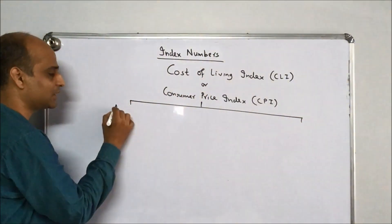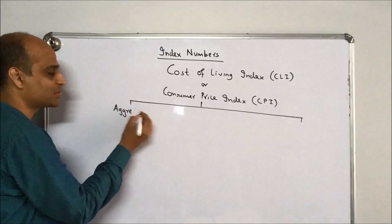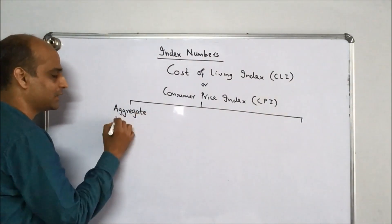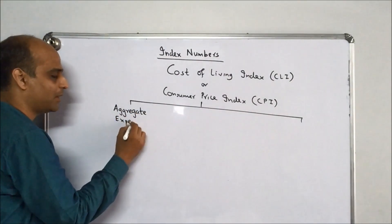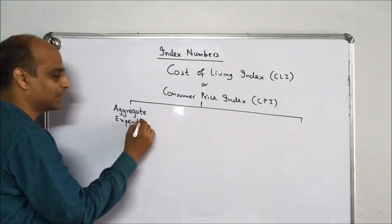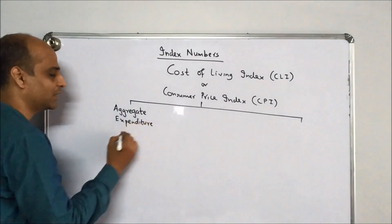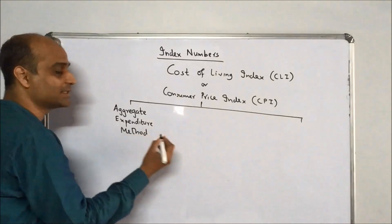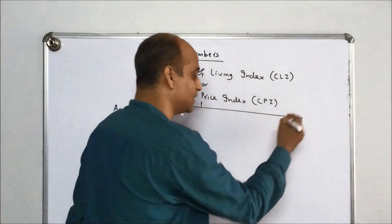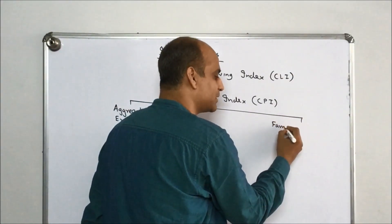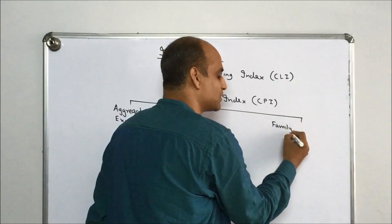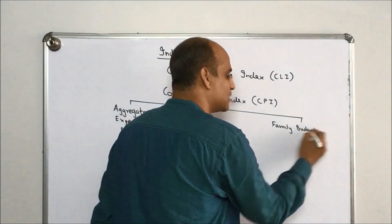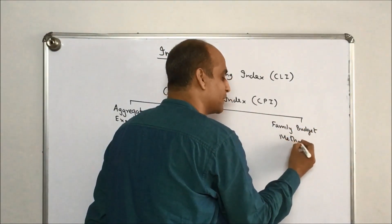There are two methods of constructing CLI. The first one is the Aggregate Expenditure Method, and the second method is the Family Budget Method.